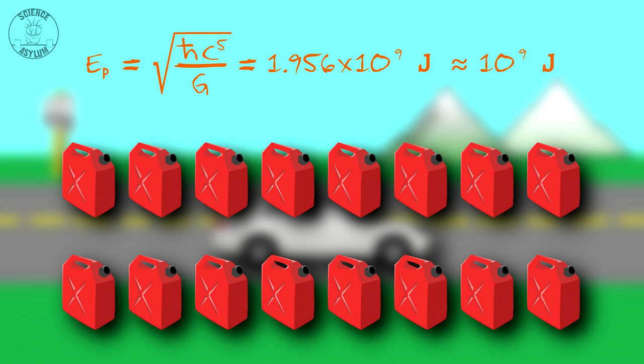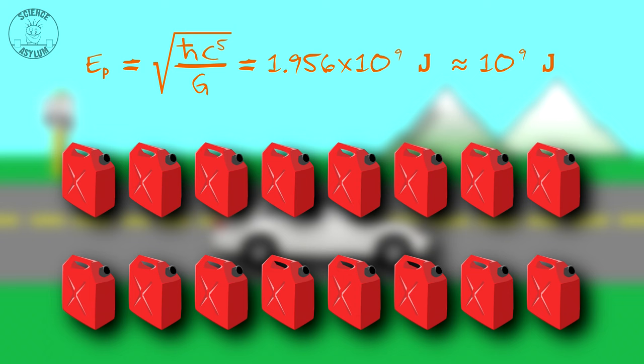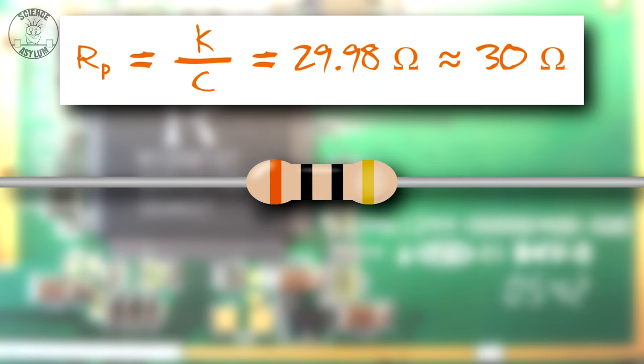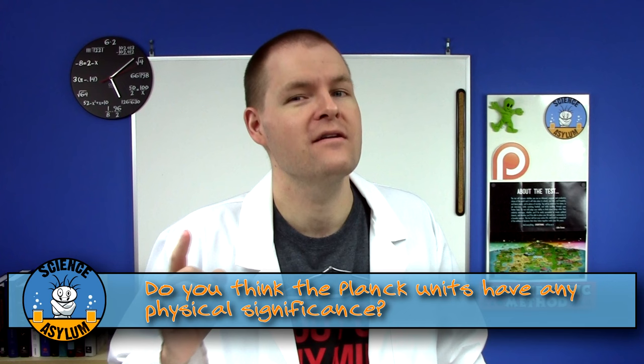What I find interesting is how ordinary some of the other Planck units are. Planck mass is about the mass of a flea egg. Planck energy is about what you could get out of a 16 gallon tank of gasoline. Planck resistance is about 30 ohms, which is a resistor I use all the time. So do you think Planck units have any physical significance? Let's continue this conversation in the comments. Thanks for liking and sharing this video. Please subscribe if you'd like to see more science like this. And until next time, remember, it's okay to be a little crazy.